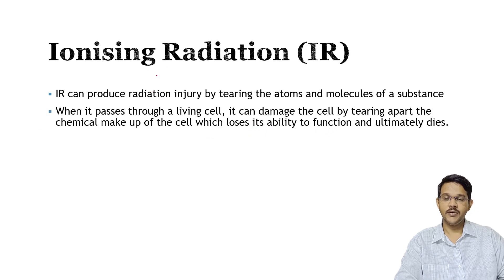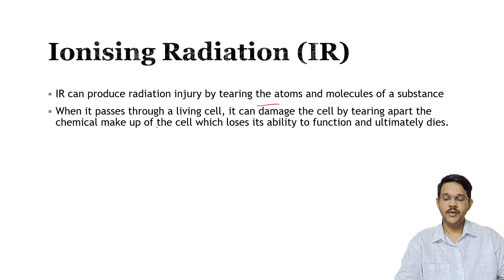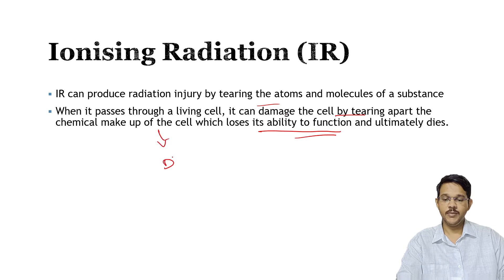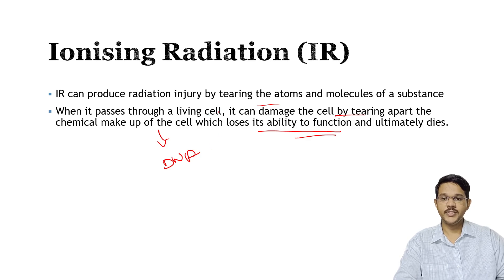Ionizing radiation is the commonest form causing radiation injuries. It can produce injury by ionizing the atoms and molecules of a substance — gamma waves, for example, when entering atoms or substances, cause ionization of atoms and molecules. When this radiation passes through a living cell, it damages the cell by breaking apart the chemical makeup of the cells, which then lose their ability to function and die. This type of radiation typically affects the DNA molecule, where the protein molecule is broken down, causing mutations. These mutations may cause the cell to die or become mutated enough to lead to cancer.